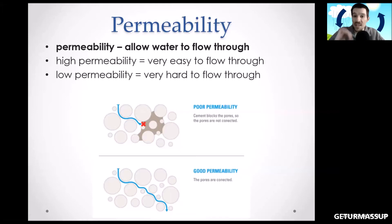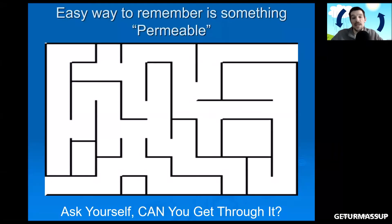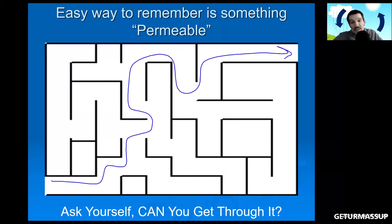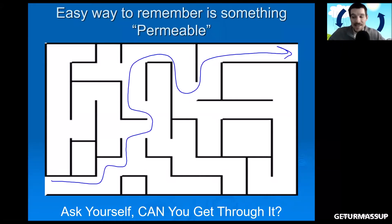Here's an easy way to remember permeability: think of a maze. Can you find your way through? If you can flow through the maze, it's permeable. If there's no way to exit the maze, that would be impermeable.